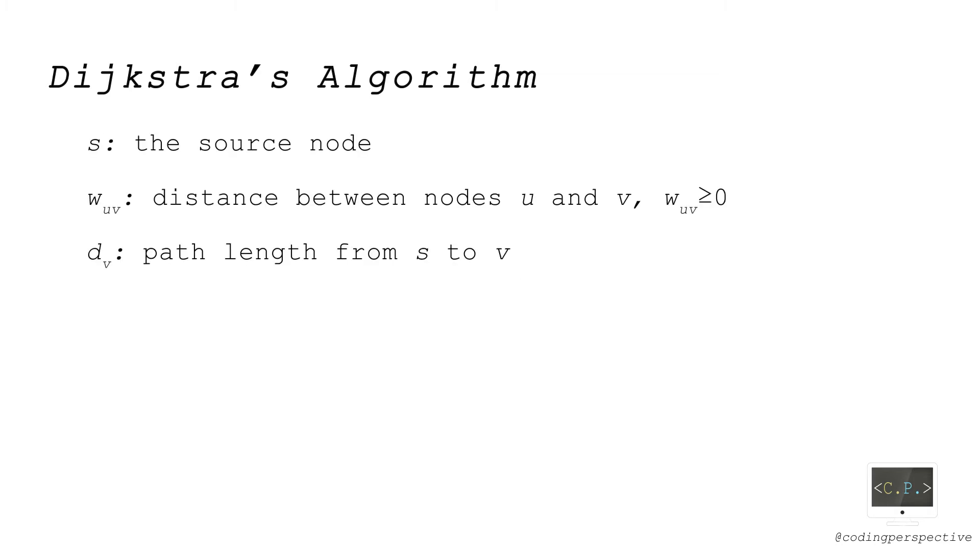Now before explaining the algorithm, here's some notation. S denotes the source node and W_uv denotes the distance between nodes u and v. Also d_v denotes the length of the path from the source node to node v. The nodes are divided into two sets, permanent and temporary nodes. Permanent nodes correspond to the shortest path lengths, whereas temporary nodes correspond to the upper bounds on the shortest path lengths.